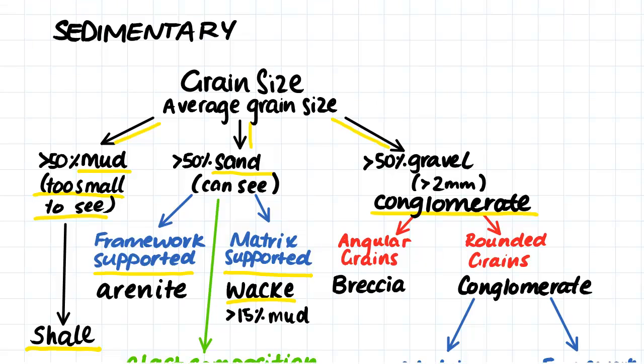If the sandstone is mainly made up of grains of sand without much mud acting as its matrix, we would call this sandstone framework supported, and that's called arenite.